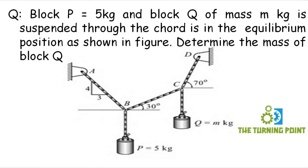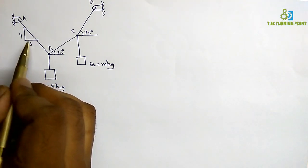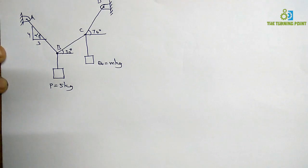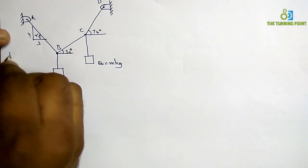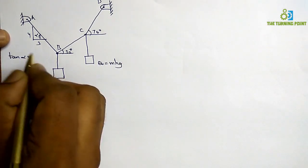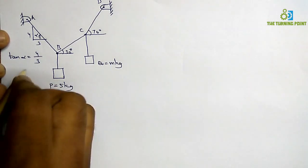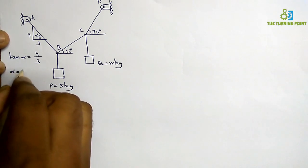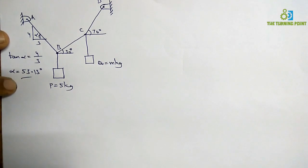When you consider equilibrium of point C, there are three unknowns. It is better to start with fewer unknowns, so I will consider equilibrium of point B first. This angle is not given, so you have to calculate it. Let this angle be alpha. From the triangle, tan(alpha) = opposite/adjacent = 4/3, so alpha = tan⁻¹(4/3) = 53.13 degrees.